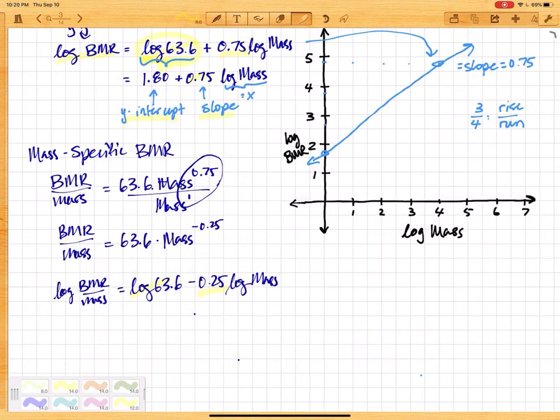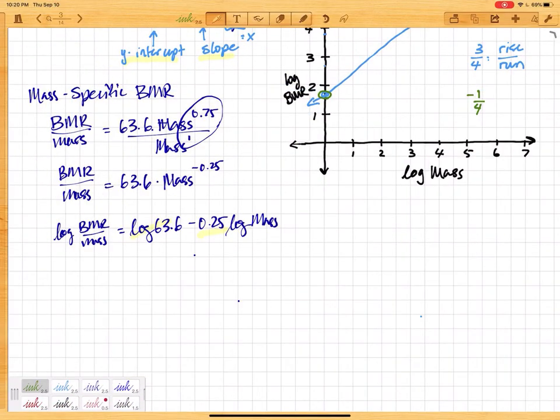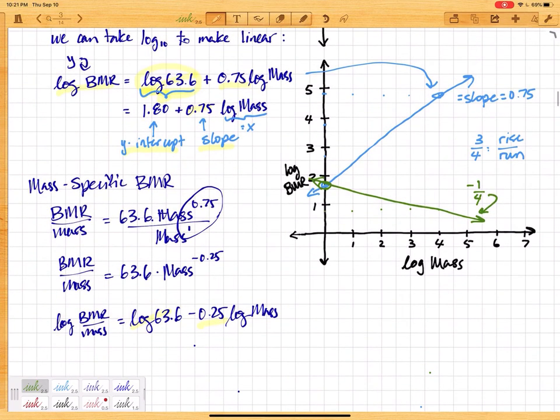If we were to plot that, let's plot it in a different color. Let's say green. So same y-intercept. But now instead of three-fourths, it's negative 0.25, and so that's going to be negative one-quarter. The negative means we go the opposite direction. So we go down 1 and then over 4. So down 1 over 4: 1, 2, 3, 4. So now our straight line is going to look like this. And this is our mass-specific metabolic rate line.